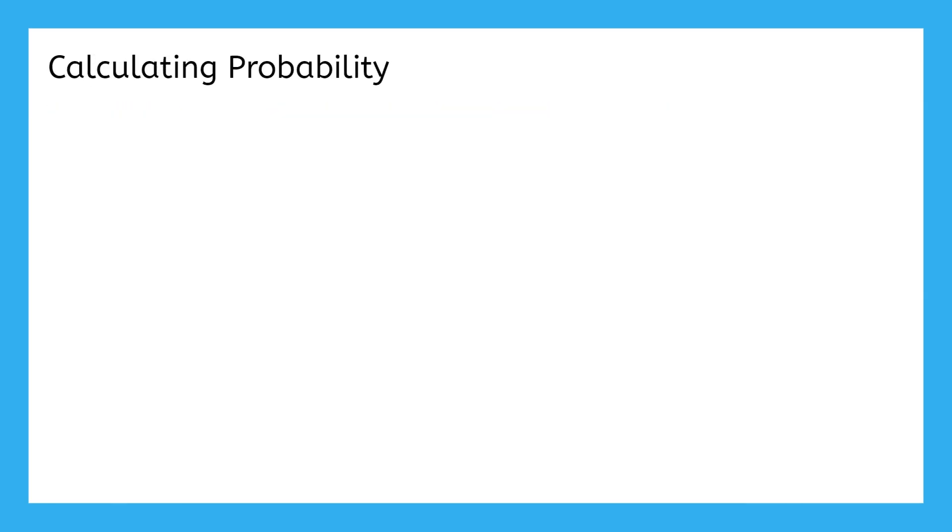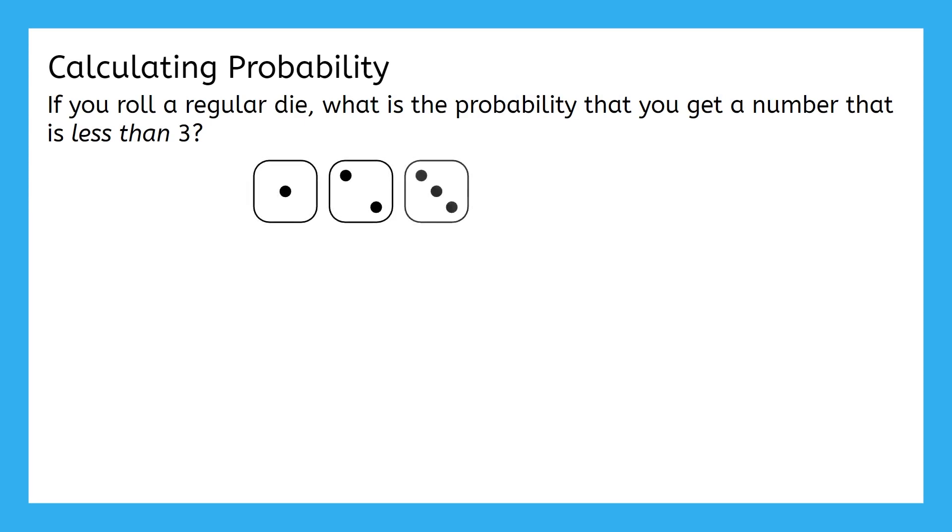Before we talk about specifics, I want you to try to make a prediction. If you were to roll a regular die, the kind with six sides that are each labeled 1, 2, 3, 4, 5, and 6, what's the probability that you would get a number that is less than 3?